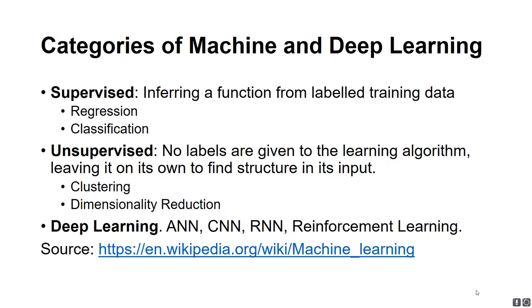I want to cover some basic categories of machine and deep learning, so that we have a common picture. Traditional machine learning is typically classified into supervised and unsupervised. Supervised machine learning is basically inferring a function from labeled training data — that means coming up with a function or equation from labeled training data.